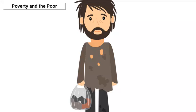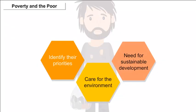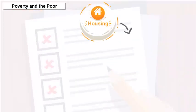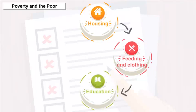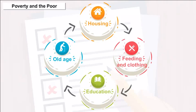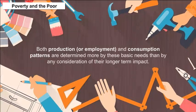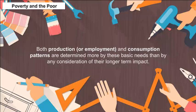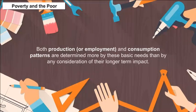When people living in poverty are asked to identify their priorities, care for the environment or the need for sustainable development are rarely at the top of their lists. Housing, feeding and clothing the family, education for their children, and care in their old age are much more significant concerns. Both production or employment and consumption patterns are determined more by these basic needs than by any consideration of their longer-term impact.